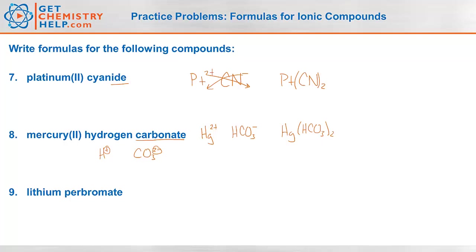Last one — lithium perbromate. Lithium is in group 1, so it's 1 positive. Perbromate: we base this off bromate. Bromate is on the right side, outside that center box, so it only has 3 oxygens; it's 1 away from the noble gases, so it's 1 negative. Per- tells me we added an oxygen, so instead of BrO3 it's BrO4 negative. A 1 positive and a 1 negative cancel out, and the formula would be LiBrO4.